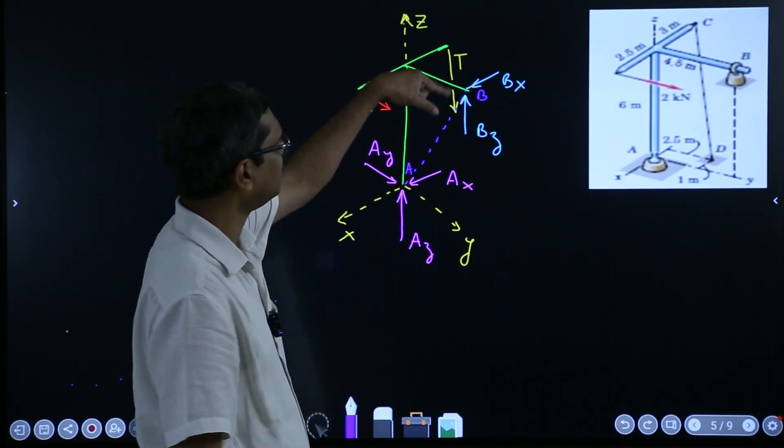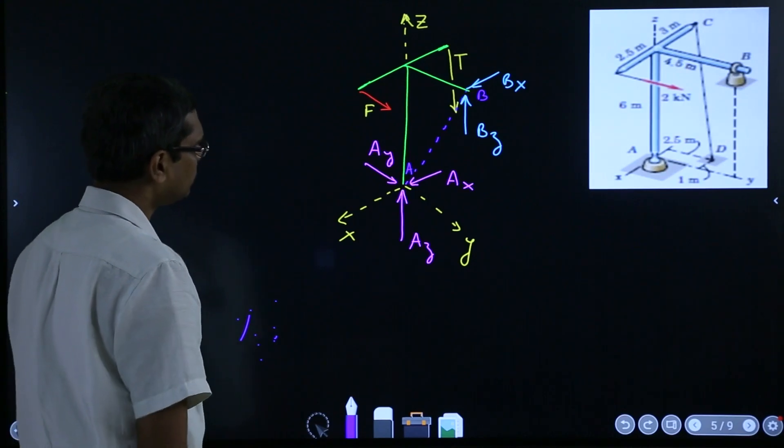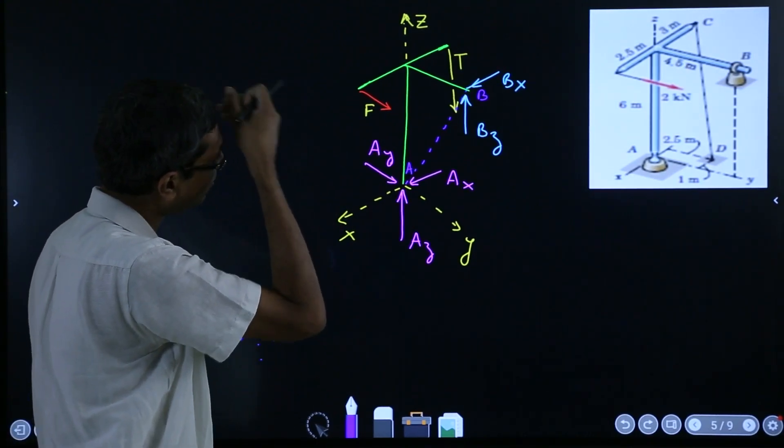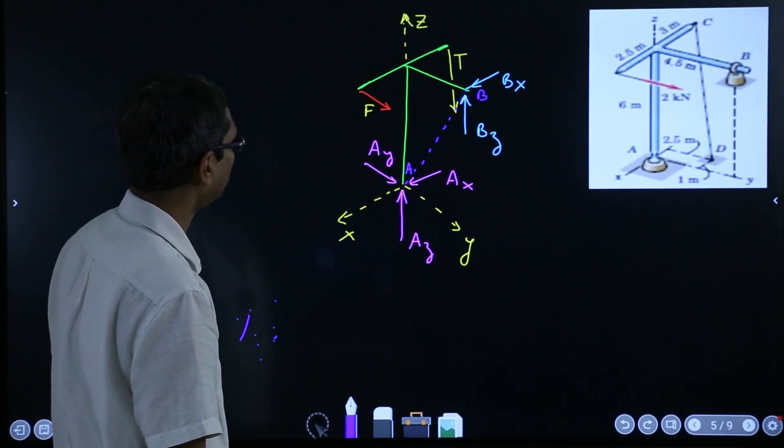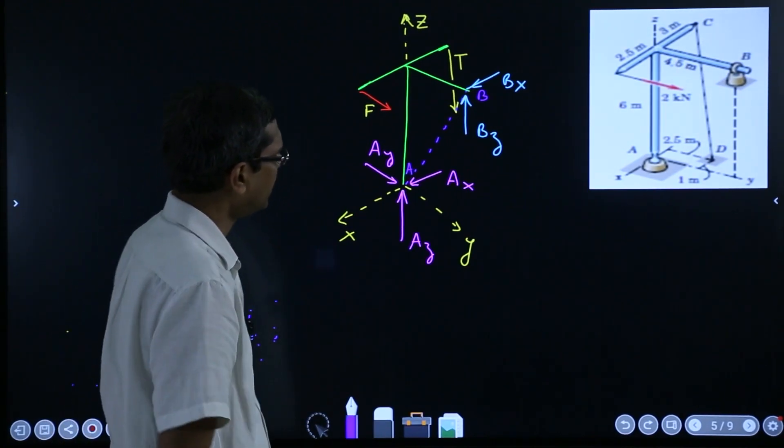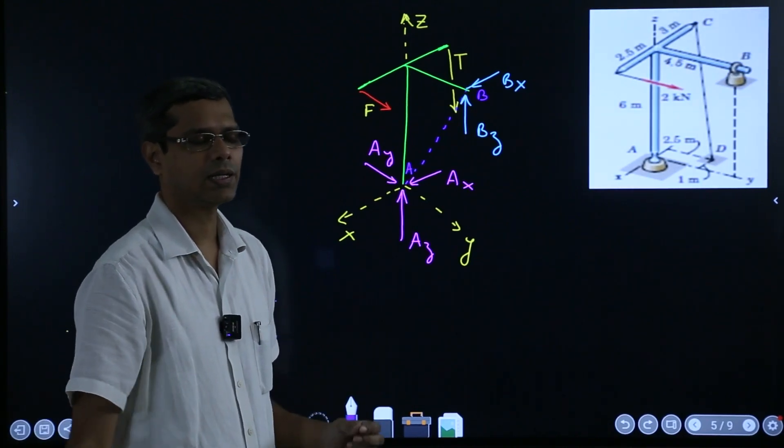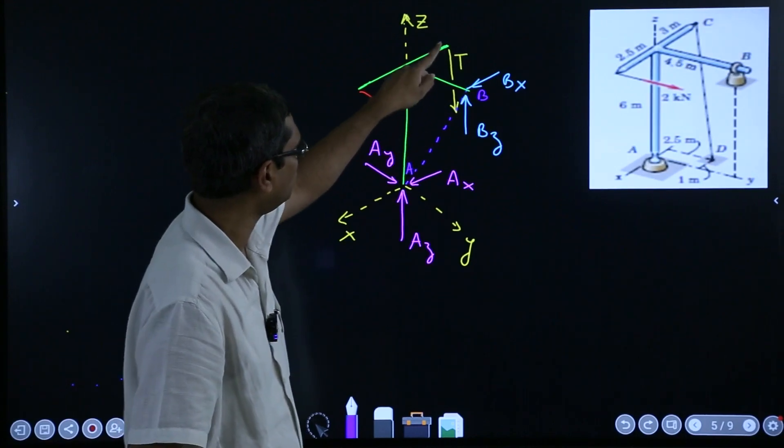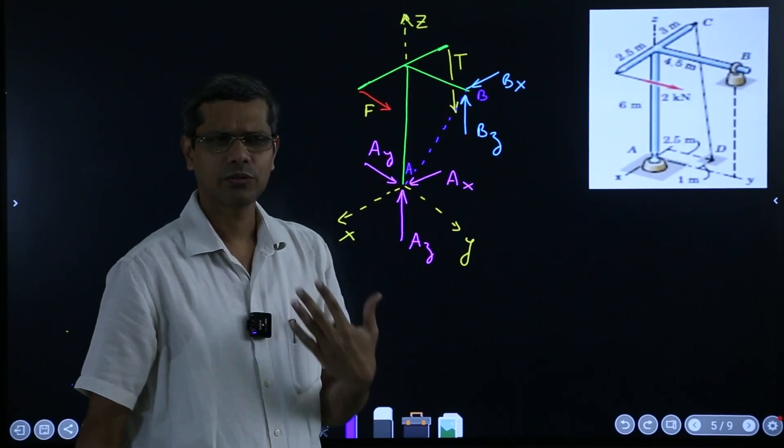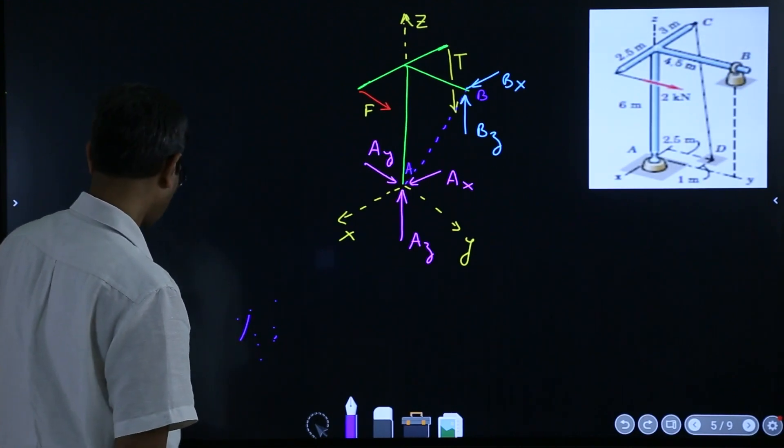Now, if we use that, then straight away you can solve for T, right? Now for taking moment about that, what all do you need? You will require, if you remember, how did we take the moment of a force about an axis? So now we have two forces, one is T, one is F. So we have to do that thing twice.